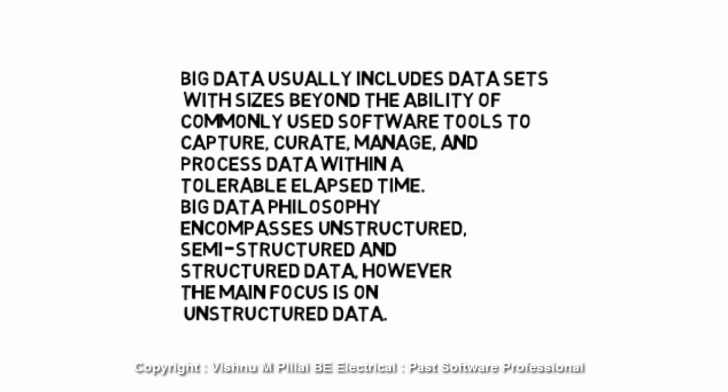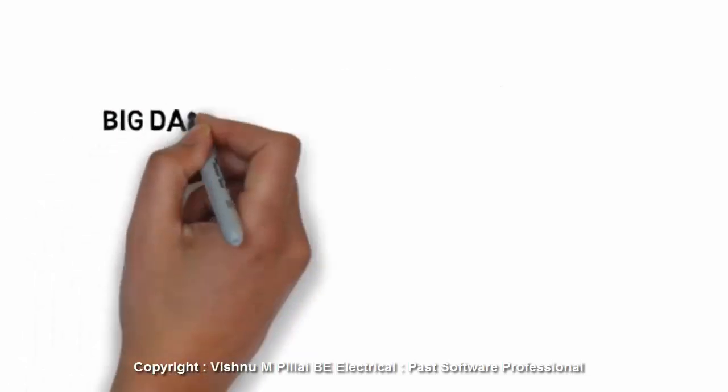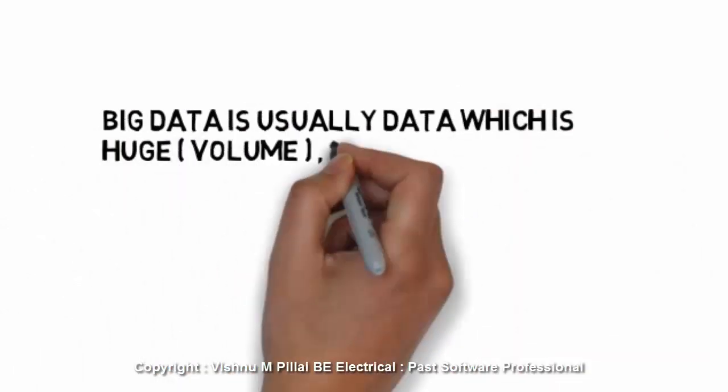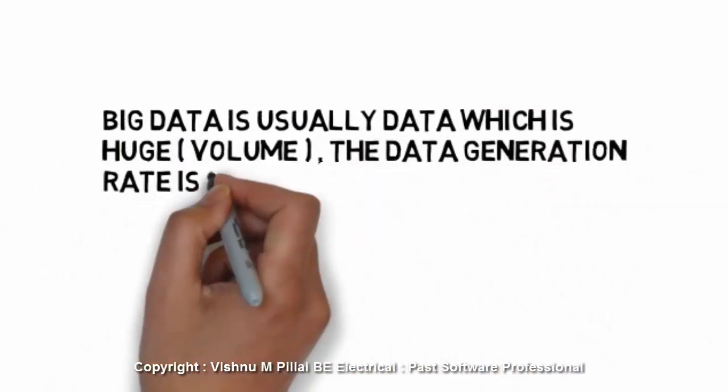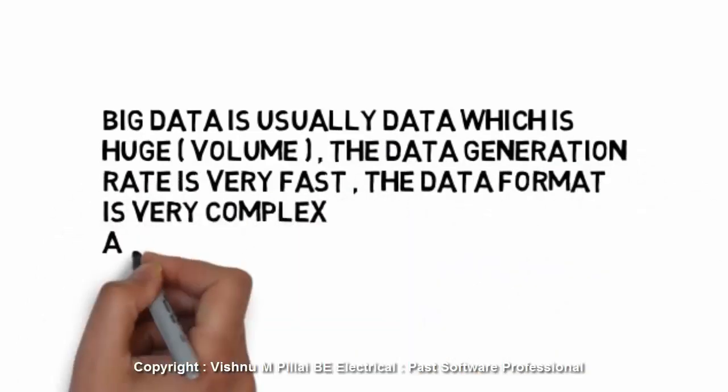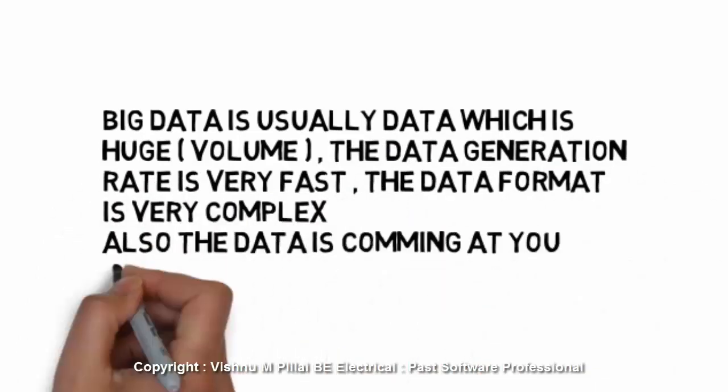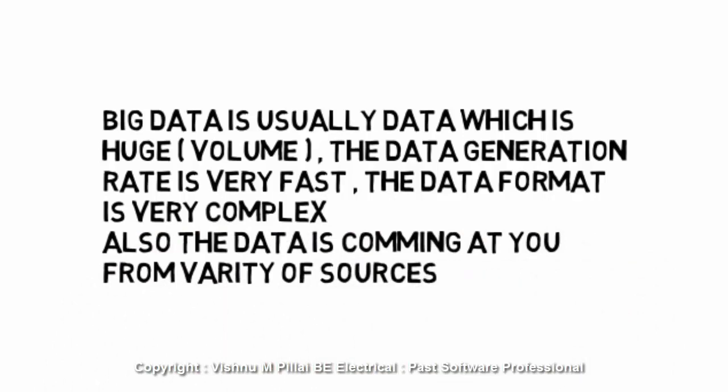We will look into what unstructured, semi-structured, and structured data are. Big data is usually data which is huge volume, the data generation rate is very fast, and the data format is very complex. Also, the data is coming from a variety of sources. That's what we have looked into, and big data can be classified as semi-structured, structured, and unstructured data.